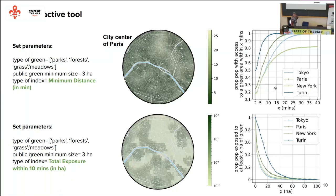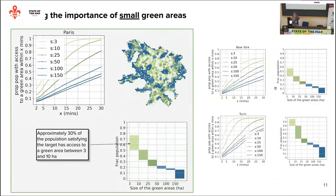Our interactive tool is going to look like what you see in the middle column of this slide. We will assign an accessibility score to each location in different urban centers around the world at very high resolution. The person using the tool can customize the index by selecting the type and size of green areas they're interested in, and the type of index — whether it's a minimum distance measuring how far the closest green area is, or an exposure index. It allows comparison of different areas within the same city, and also across different cities.